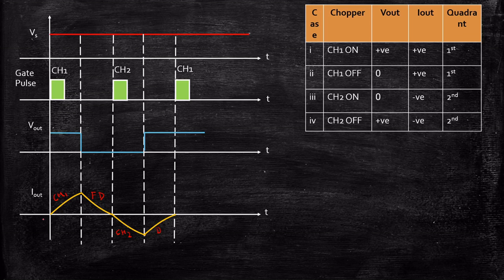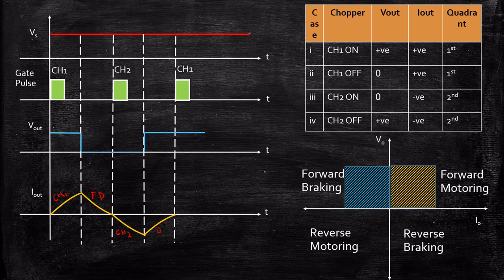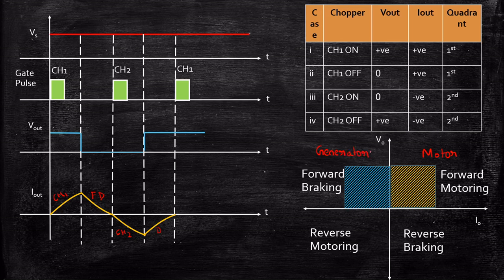The conclusion for type C chopper is that it operates in both the first and second quadrants because the output voltage is always positive but the current can go in either positive or negative direction. If you connect a motor as a load with a type C chopper, it can operate as a motor where power flows from source to load, or as a generator where current flows from load to source due to the back EMF. Type C chopper thus provides both motoring and generating modes in one circuit, avoiding the need for separate type A or type B choppers.